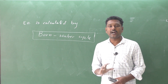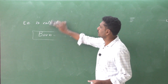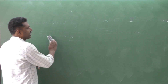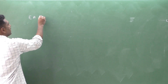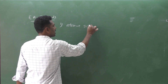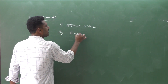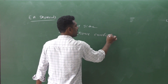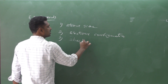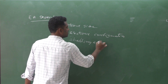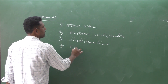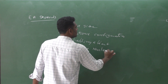Electron affinity depends on several factors. The first factor is atomic size. The second factor is electronic configuration. The third factor is the shielding effect. The fourth factor is effective nuclear charge. Electron affinity depends on these four factors.